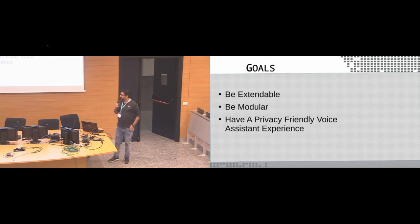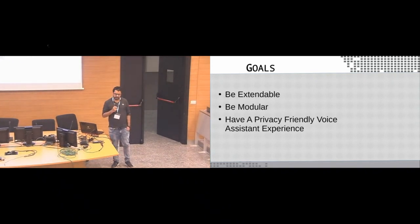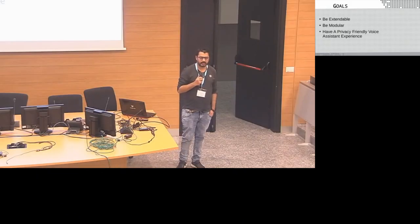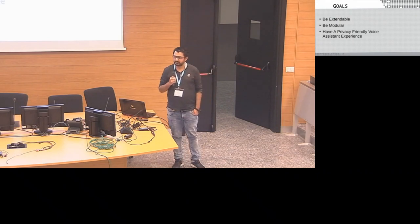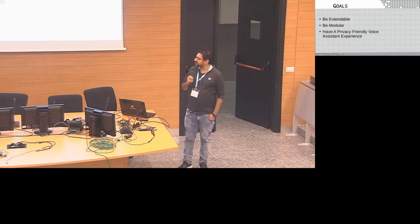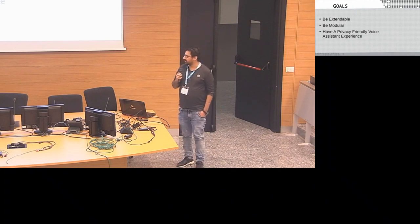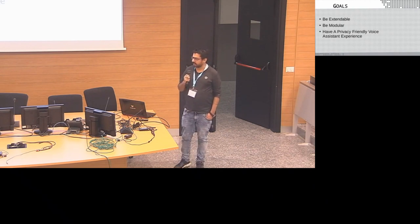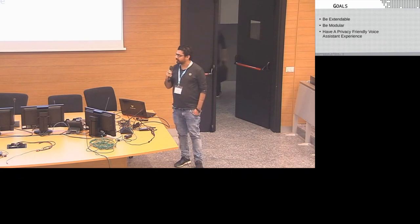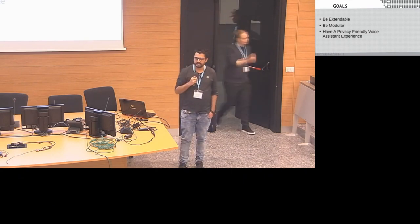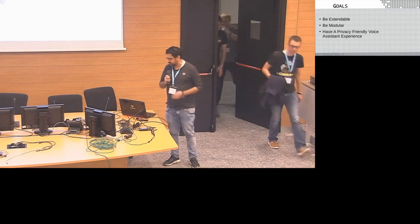Before I get to the goals, I would like to say that a lot of car manufacturers today are coming out with cars with smart infotainment systems. Those smart infotainment systems are generally closed down, aren't modular, and most of the data — when they say they have a smart assistant — is probably going to a Google server or Amazon Alexa. So there's hardly any privacy in those smart infotainment systems.